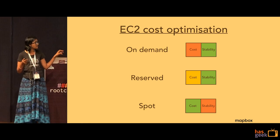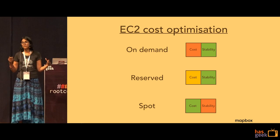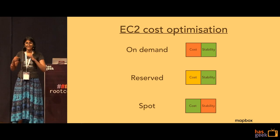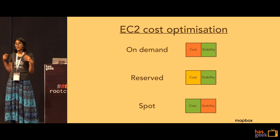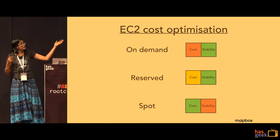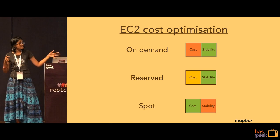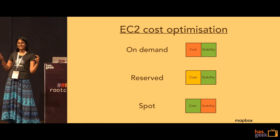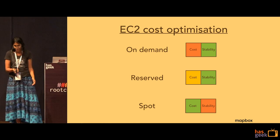Lastly, you have the spot instance. Spot instances come from Amazon's unused server space and they're ridiculously cheap — in fact, you can have about 90 percent savings compared to what you'd spend on on-demand instances. But these instances are very unstable, and their pricing is governed by the spot market.